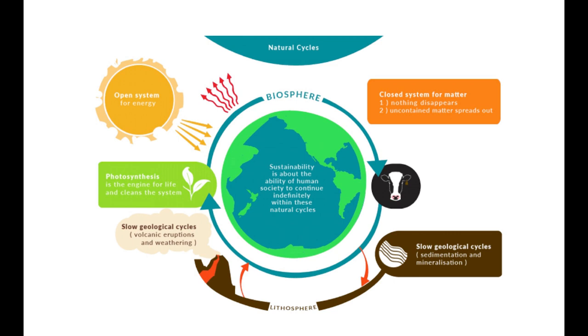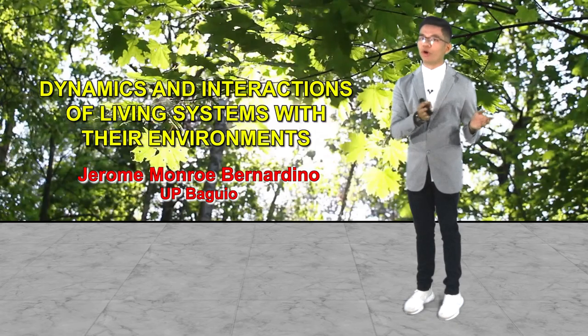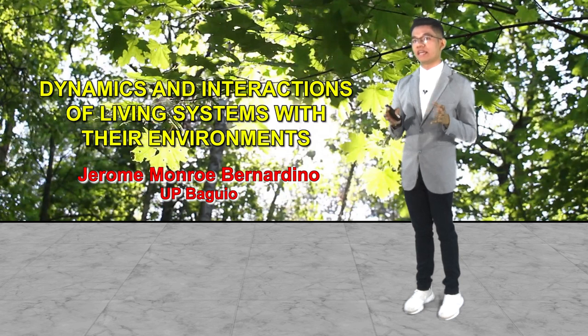Let me begin with the discussion by showing you this introductory figure. You must examine this figure by heart, for everything that will transpire in this presentation will revolve around the concept depicted by this figure. In essence, this figure depicts a living system wherein there are interactions between the different components involved. Essentially, there are only two of these components, namely energy and matter. The point I would like to emphasize is that in order for a system to be classified as a living system, it needs to be described as both an open system and a closed system.